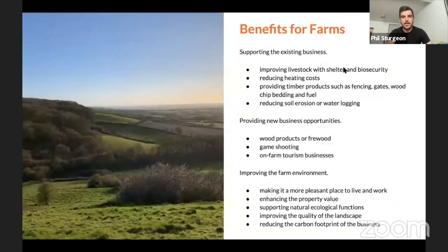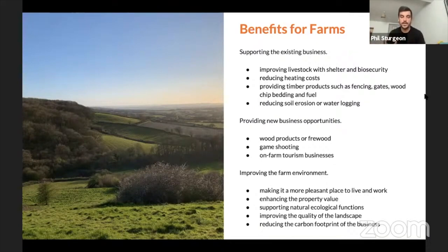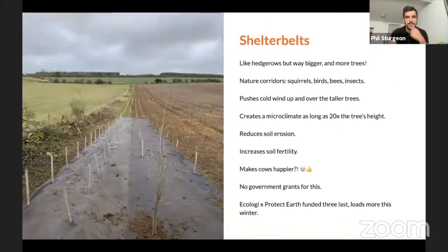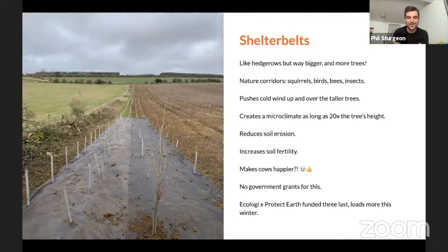We help fix that by working out the grants and helping with maintenance, thinning, and watering, or working with local climate action groups to reduce travel miles. Having trees next to fields reduces wind damage, soil erosion, improves water retention, and reduces the need for fertilizers. Shelter belts in particular are fantastic at this, but often receive no government grants.